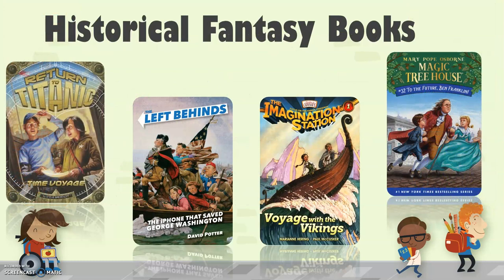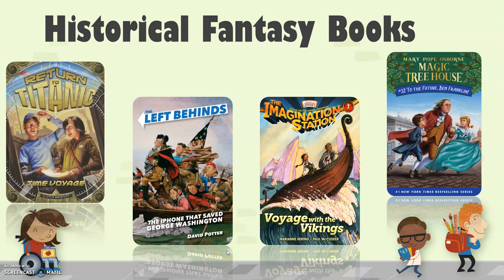Here are more examples. Return to Titanic is a four-book series where kids touch artifacts from the Titanic and get transported back to the boat — obviously that didn't happen. Magic Treehouse — there is no magic treehouse that you can open a book and get sucked into. The Imagination Station has kids going back to different time periods. The Left Behinds by David Potter — The iPhone That Saved George Washington — George Washington didn't know what a cell phone, telephone, or TV was. The girl with earmuffs and a hoodie during George Washington's time would not have really happened.